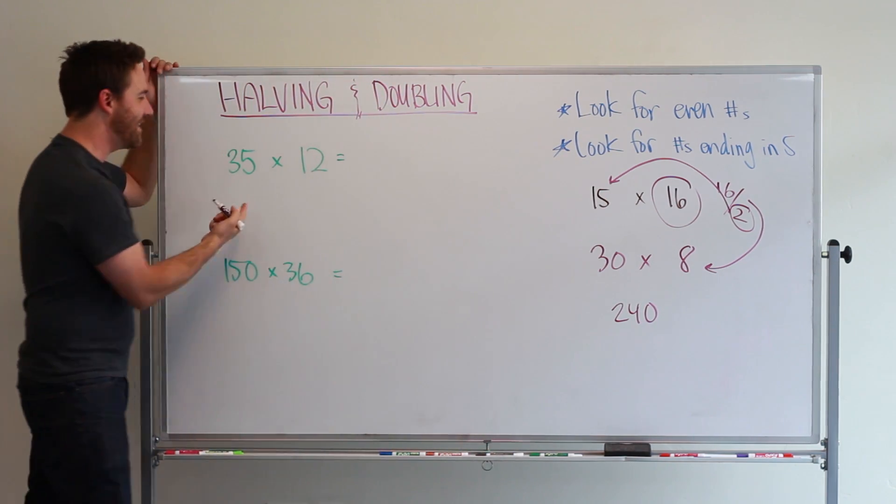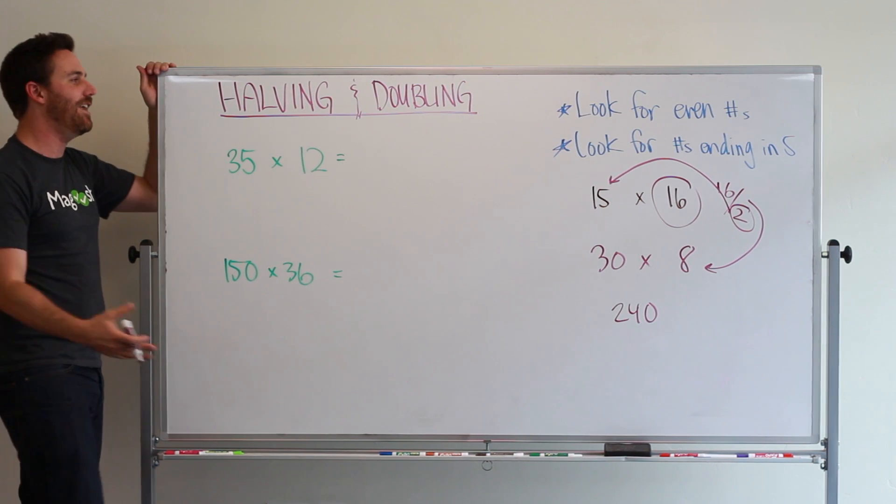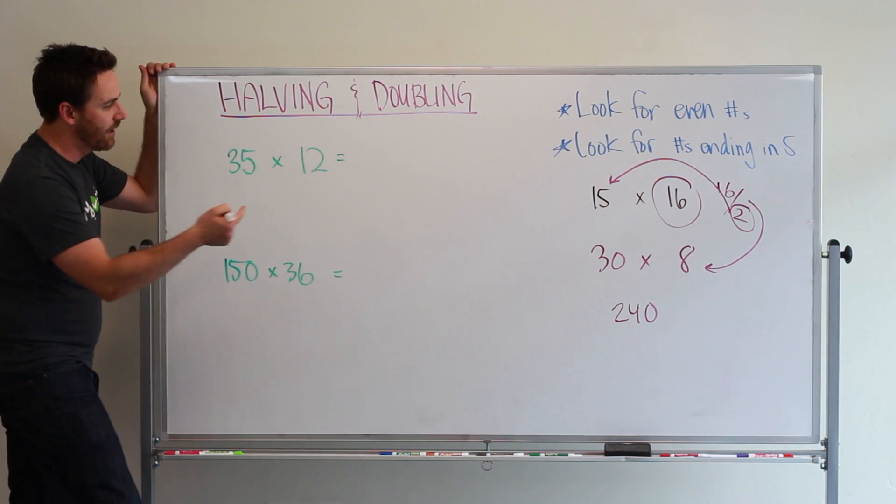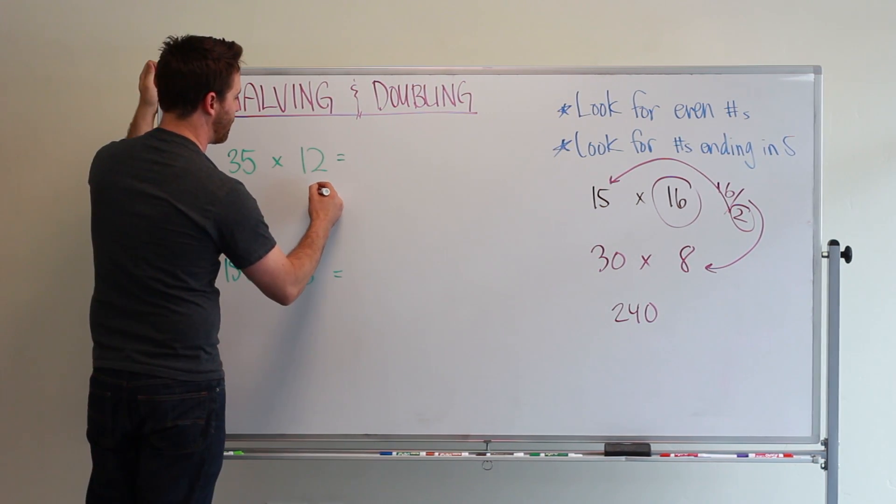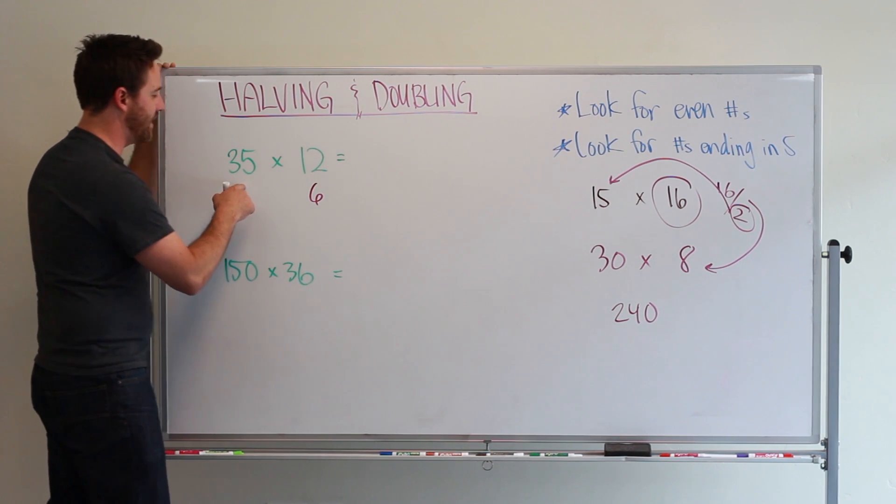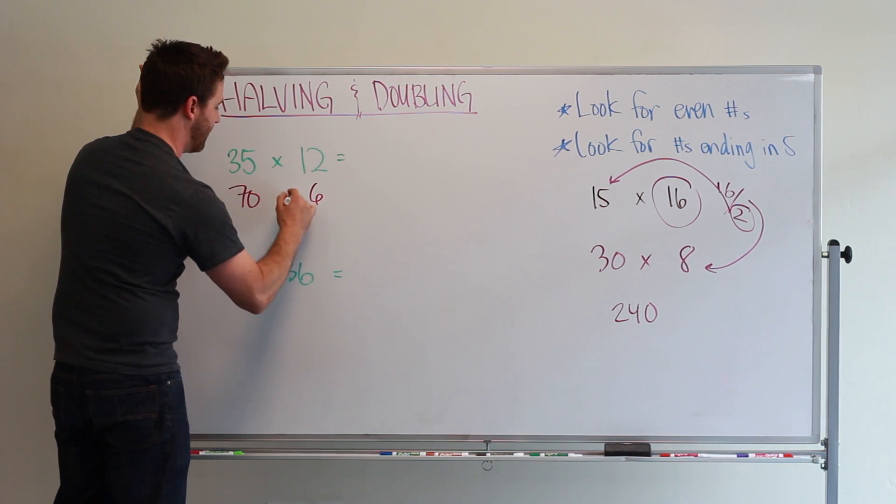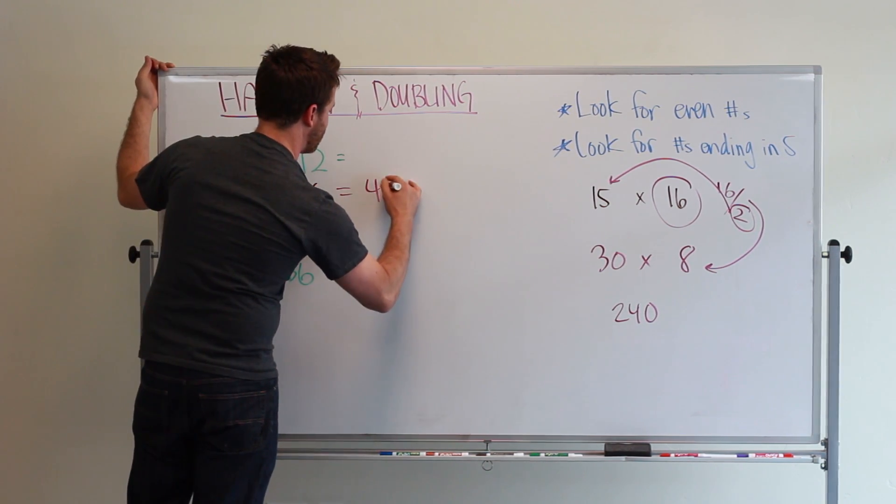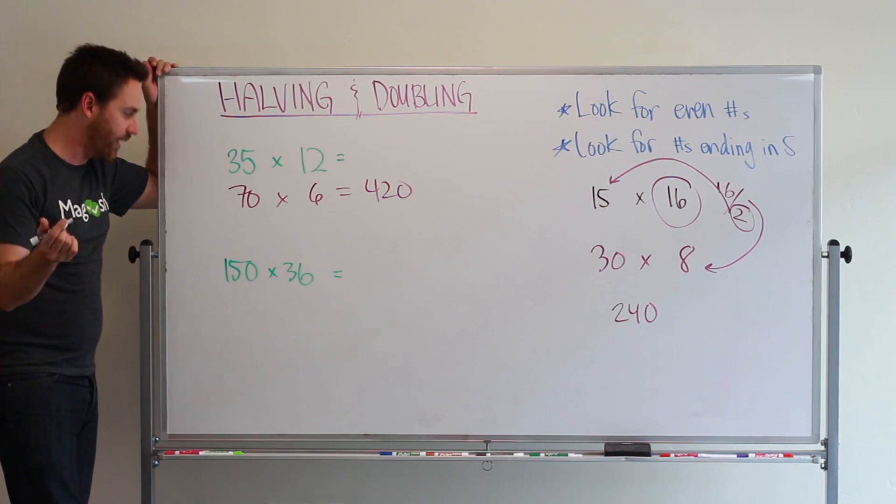If we go back to these numbers, it's much easier to solve if we halve and then double. We can halve our 12 to get 6 and double 35 to get 70. Now that's super easy: 70 times 6 is 420.